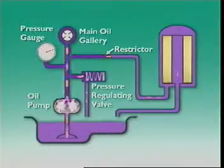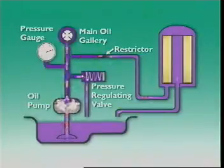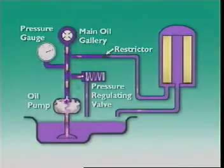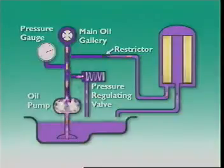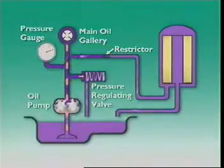A diesel filter can have a full flow element to trap larger impurities and a bypass element to collect sludge and carbon soot. In a bypass system, the bypass element filters only some of the oil from the pump by tapping an oil line into an oil passage. It collects finer particles than a full flow filter, and after this oil is filtered it goes back to the sump.